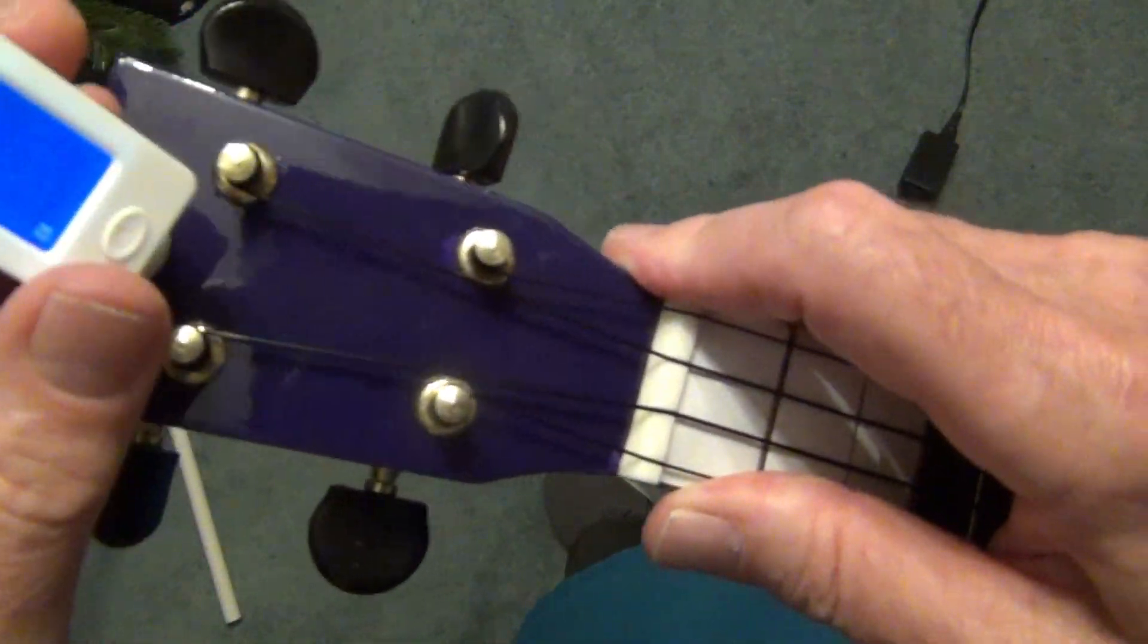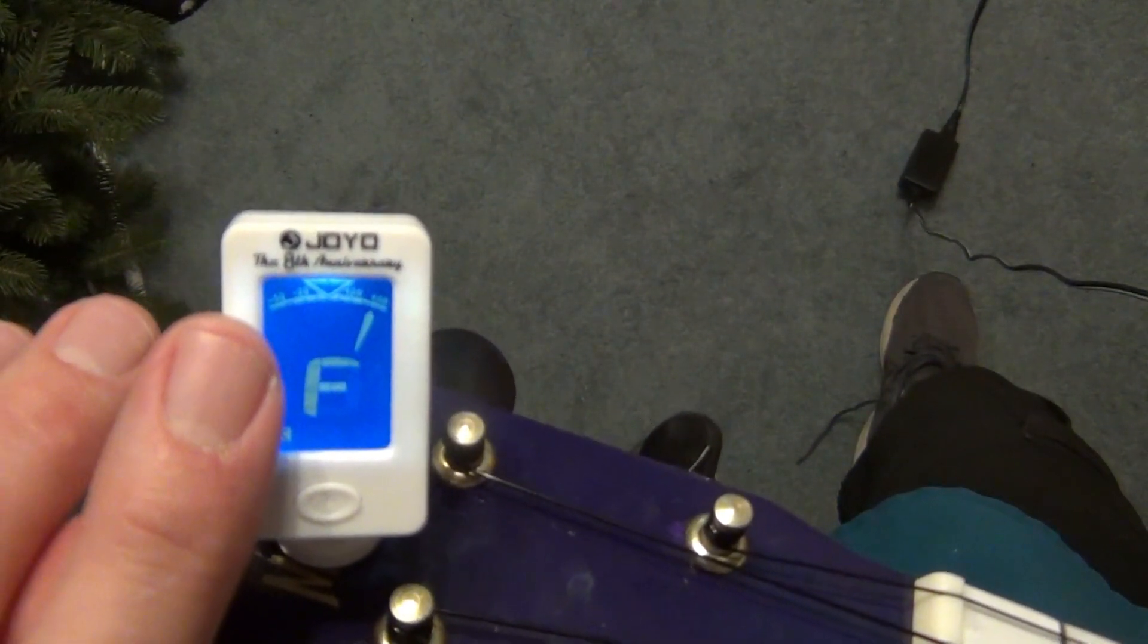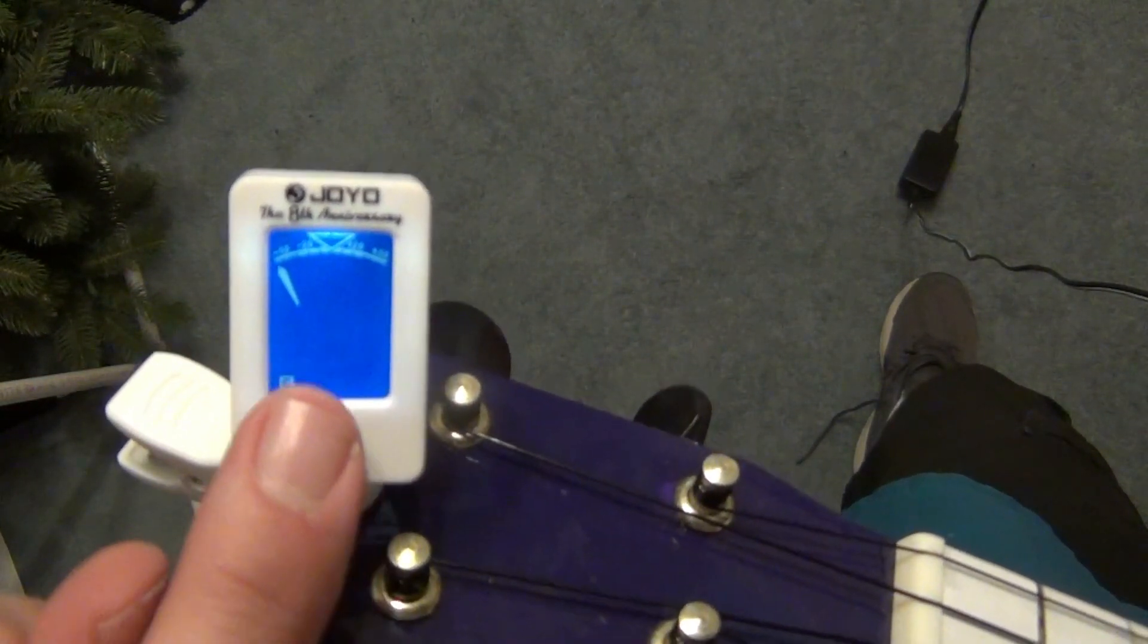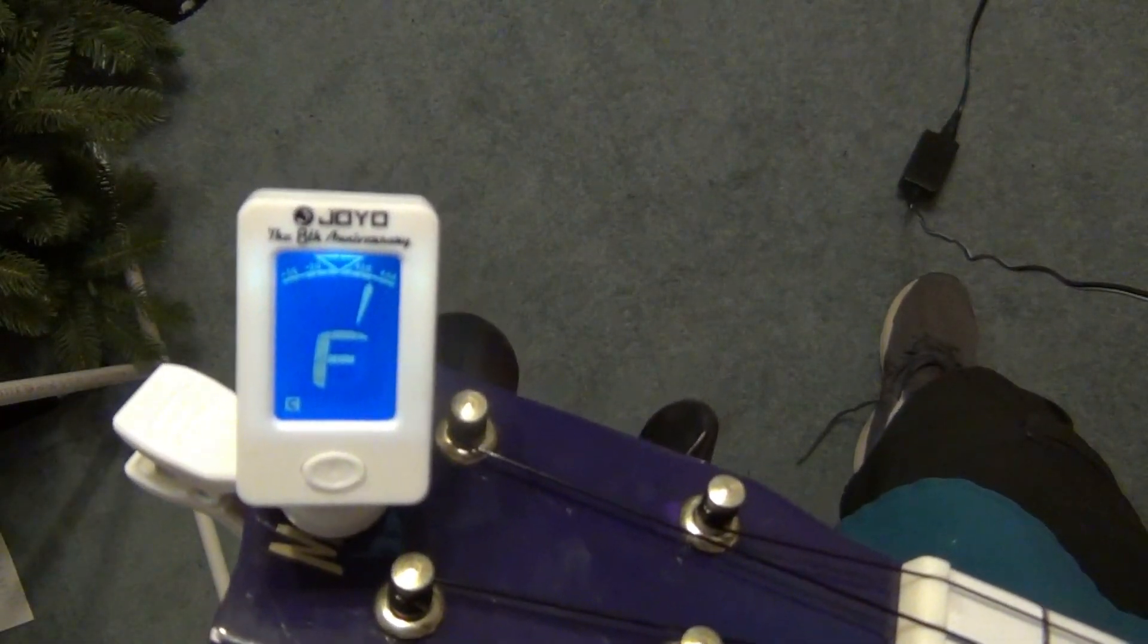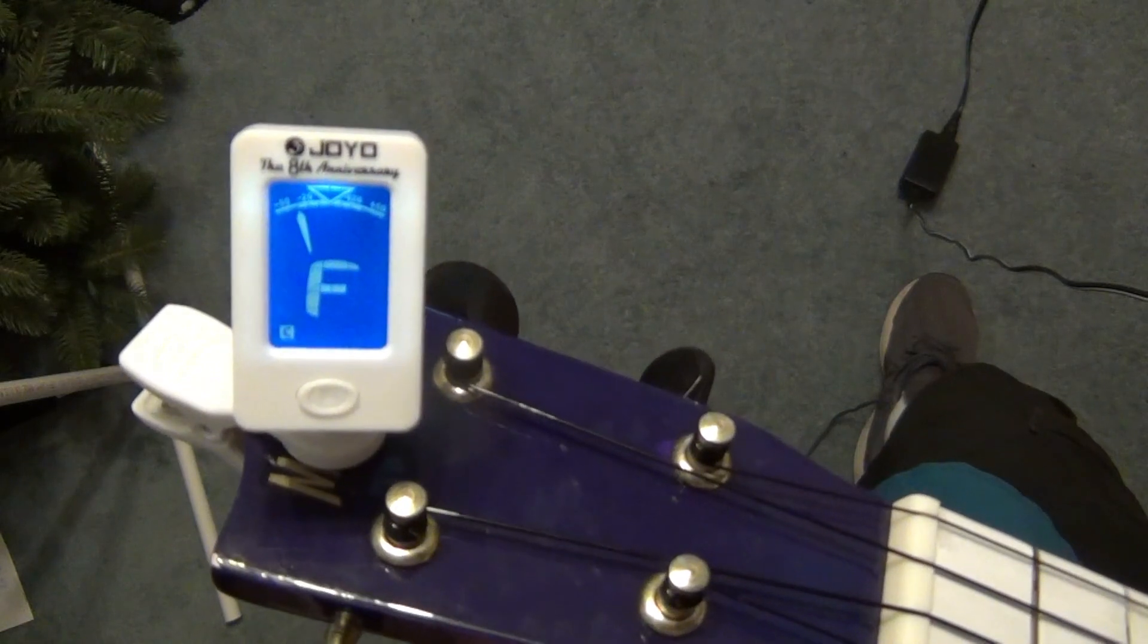So clamp that onto your headstock and you'll notice that there's a little pointer right over there. And when I hit the string it moves and if it's to the right like that was, that means you're sharp of what that note said. If it's to the left of the middle that means it's flat.